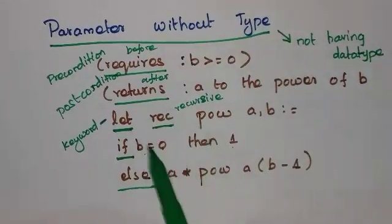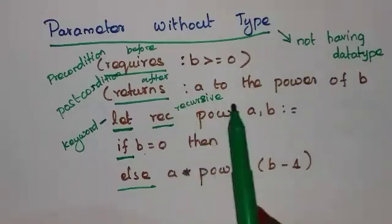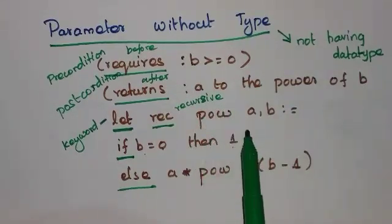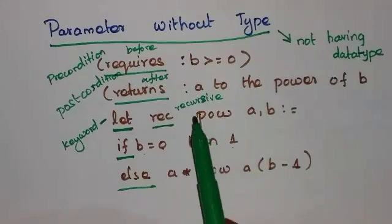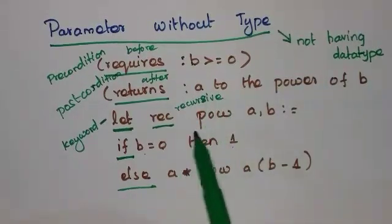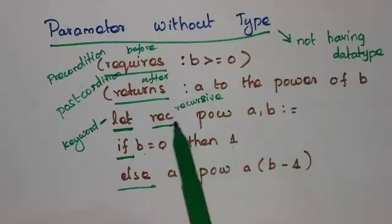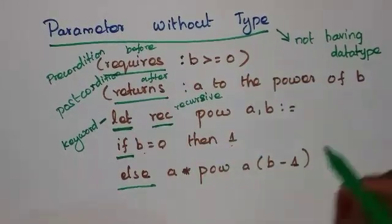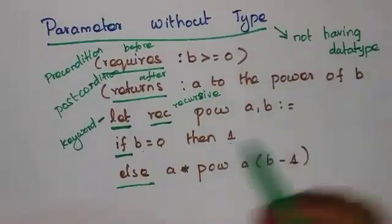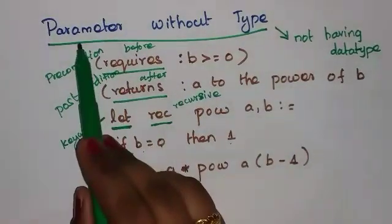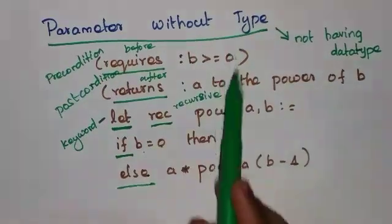You can see here that we have not mentioned any data type. Some language compilers solve this problem automatically, but some language compilers need the data type to be mentioned. Here, the data types can be added by the compilers because it is a parameter without type — data type is not given here.